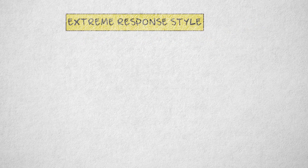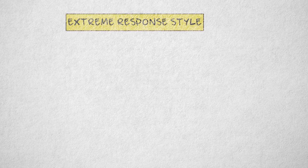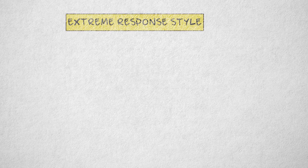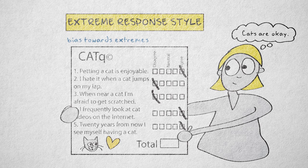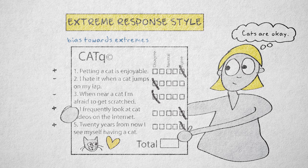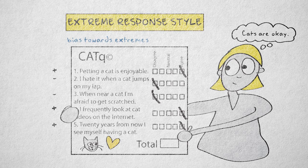An extreme response style is much harder to detect. This bias can occur, for example, when respondents don't want to think about exactly how strongly they agree or disagree with an item. They'll just choose the most extreme option. So unlike the acquiescence bias, participants' responses are consistent, just more extreme than their true value.